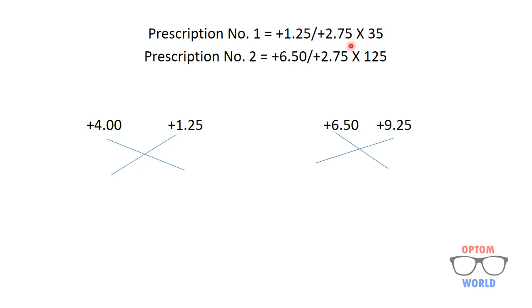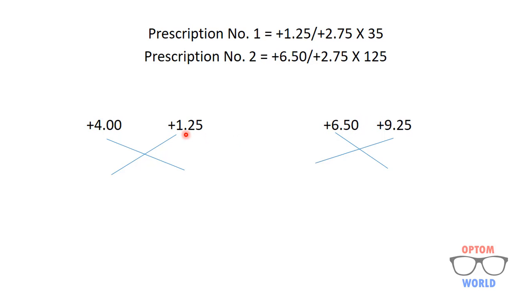This is another example in which the axes are oblique. Prescription number one is plus one point two five with cylinder plus two point seven five at 35, and prescription number two is plus six point five zero sphere with plus two point seven five cylinder at 125. We make optical crosses for both prescriptions and add them. For prescription one the optical cross is plus one point two five at the 35-degree meridian and plus four at the 125-degree meridian. For prescription two, the optical cross is plus six point five zero at 125 axis and plus nine point two five at 35 axis.